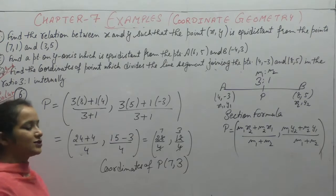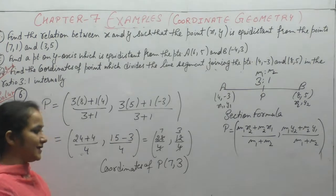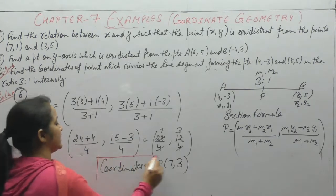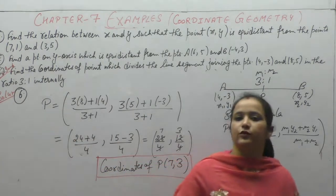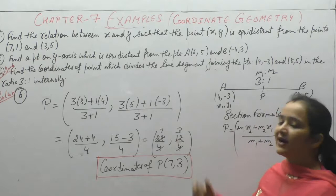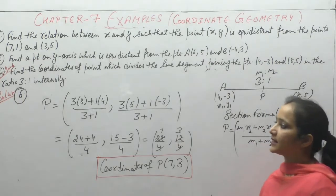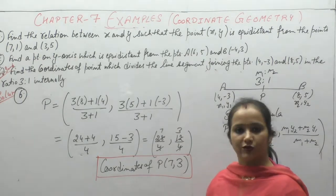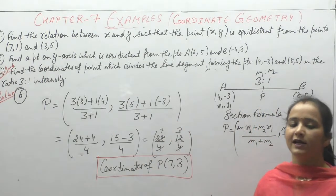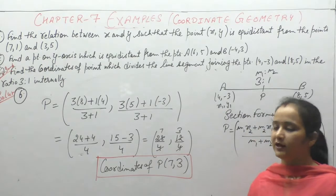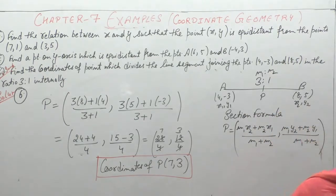x-coordinate is 7 and y-coordinate is 3. This question is important from examination point of view. Point divides line segment AB in ratio 3:1 internally. We used section formula and found the coordinates of the point that divides AB line segment.